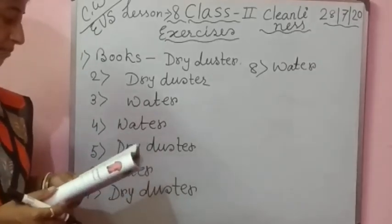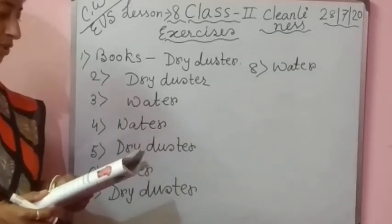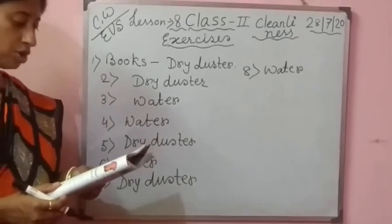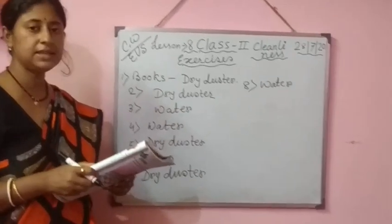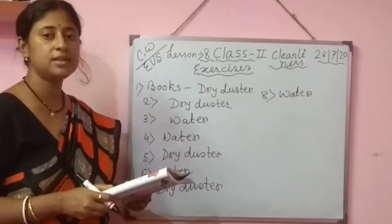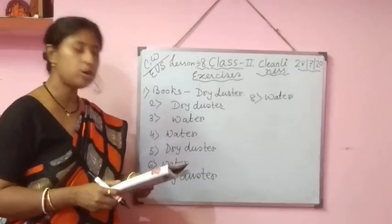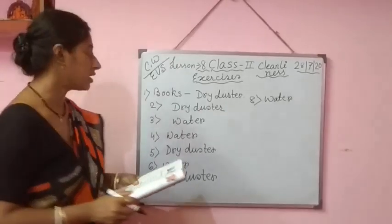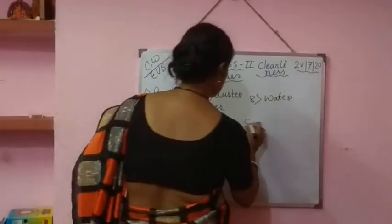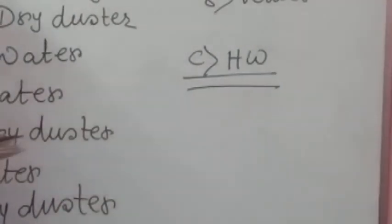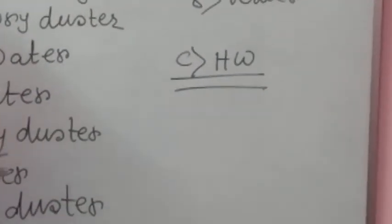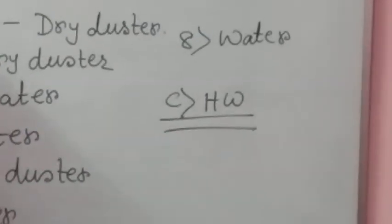Then number C: How often do you and your best friend clean the given things? This is your homework. Number C — homework.